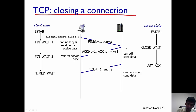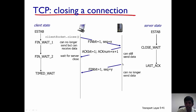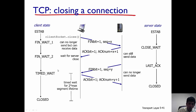The server can still send data, but after some time, when it is done sending, it also wants to close the connection. So the server sends a message with the FIN bit equal to one and a sequence number equal to Y. After this point, the server can no longer send data. When the client receives this FIN, it acknowledges the receipt by sending a segment with the ACK bit equal to one and acknowledgement number equal to Y plus one.